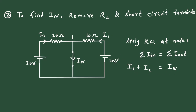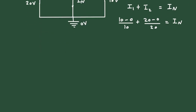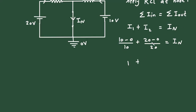Now I1 will be 10 minus this node voltage. Here let's assume this is the reference or ground node, so its voltage is 0 volts. So I1 equals 10 minus 0 divided by 10. And I2 will be 20 minus 0 divided by 20. So 10/10 is 1, plus 20/20 is 1, which equals In.